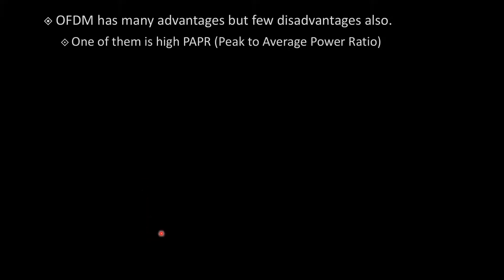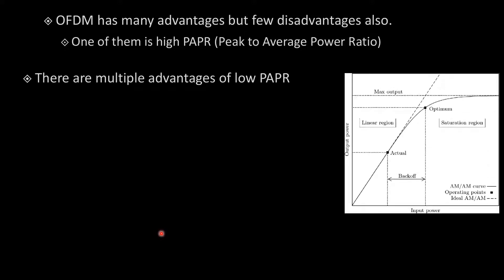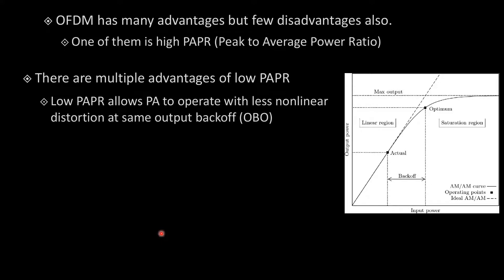OFDM has many advantages as we all know, but a few disadvantages also — one of them is high PAPR, which is peak-to-average power ratio. There are multiple advantages of having low PAPR. For example, low PAPR allows the power amplifier to operate with less nonlinear distortion at the same output back-off. If I have a lower PAPR value, I can keep the output back-off the same, but the peak power will not go to the saturation region every time.